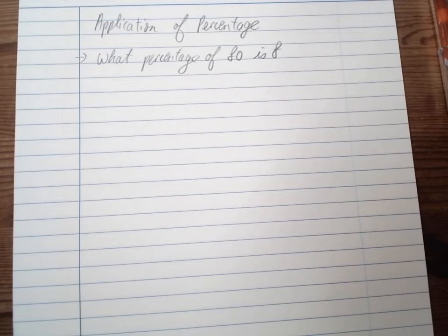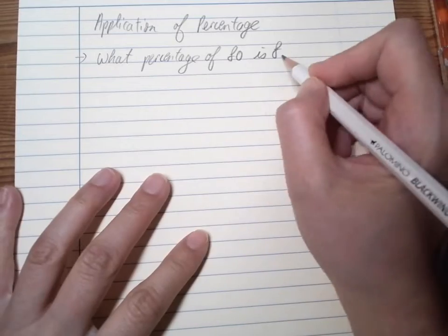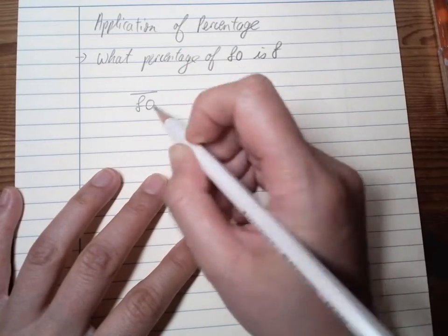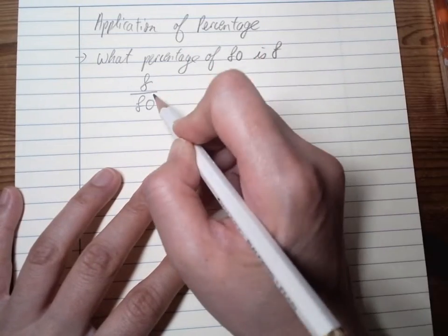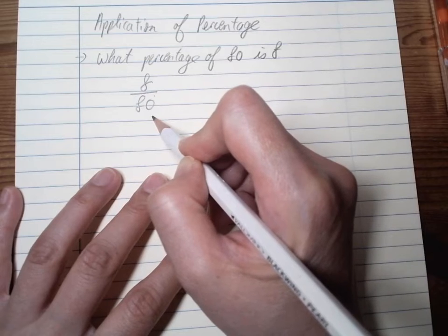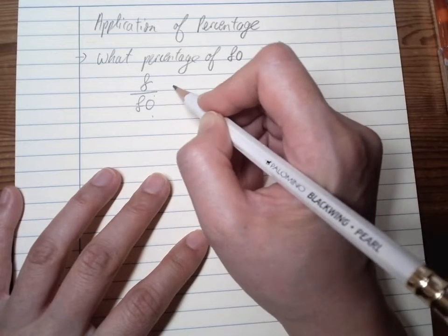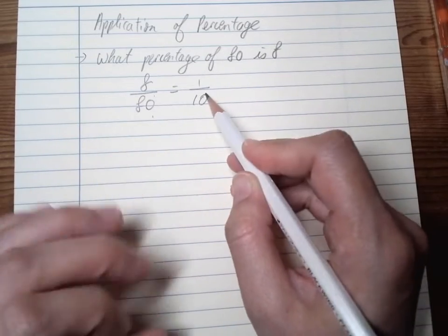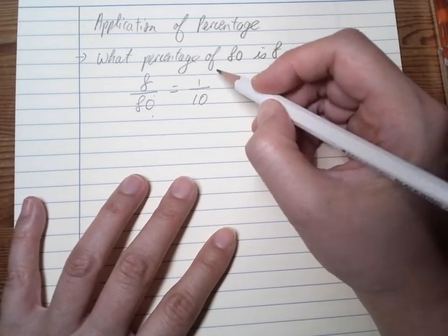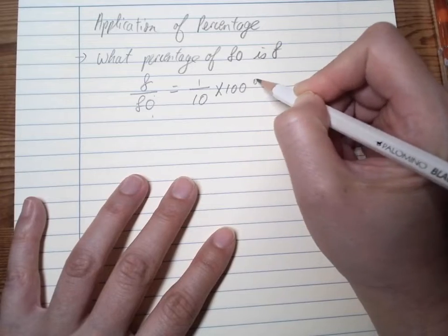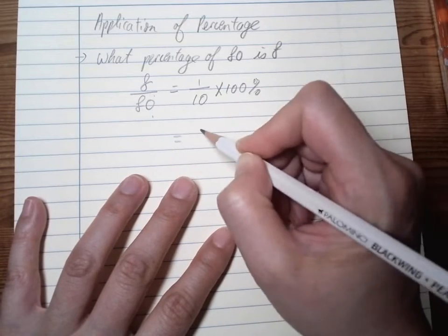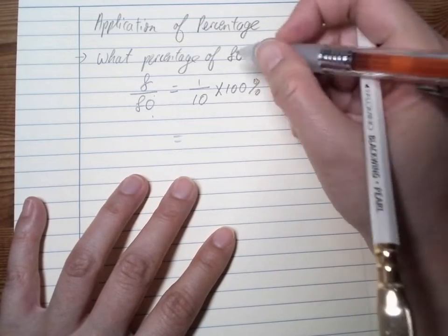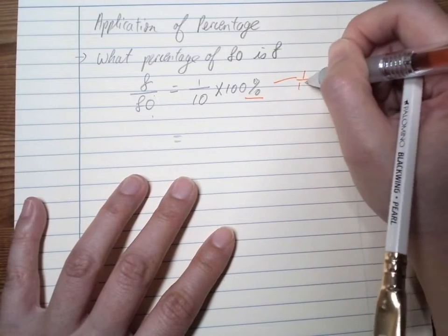We need to put it in a fraction, so 8 of 80. We can simplify that to become 1 over 10. Now we're going to change the fraction to percentage, so we can multiply by 100 percent.